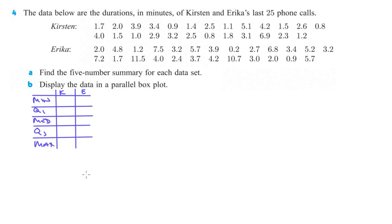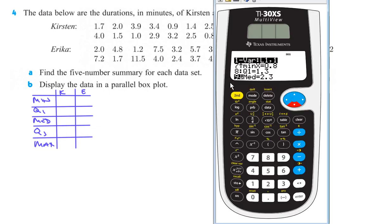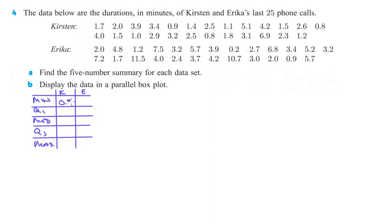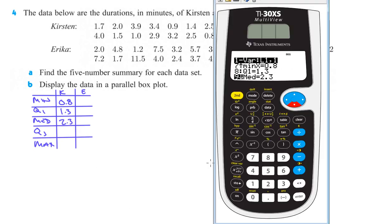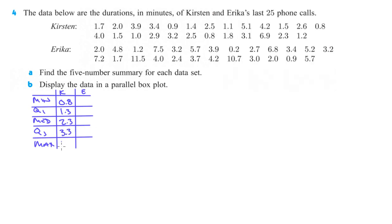Okay. So, back to our calculator. We've got 0.8, 1.3, and 2.3. Okay, and then also for quartile three, it's 3.3, and then 6.9. Okay, there's our five-number summary for Kristen.